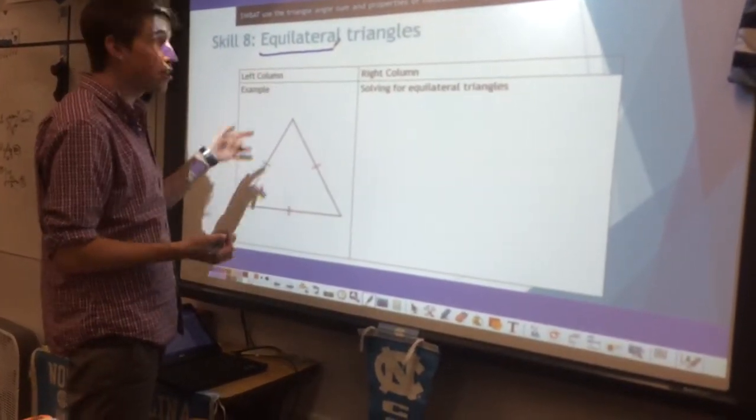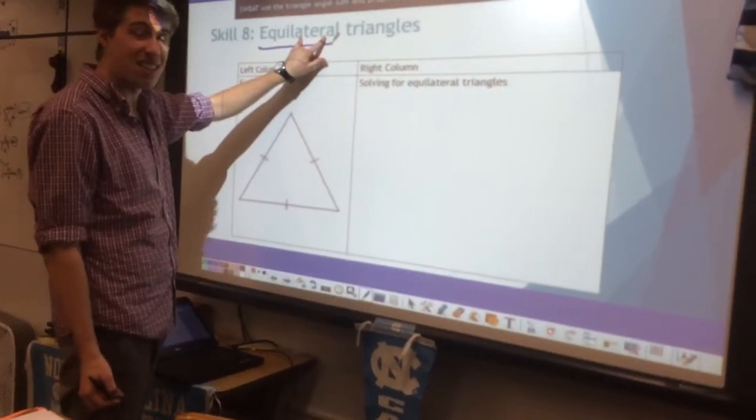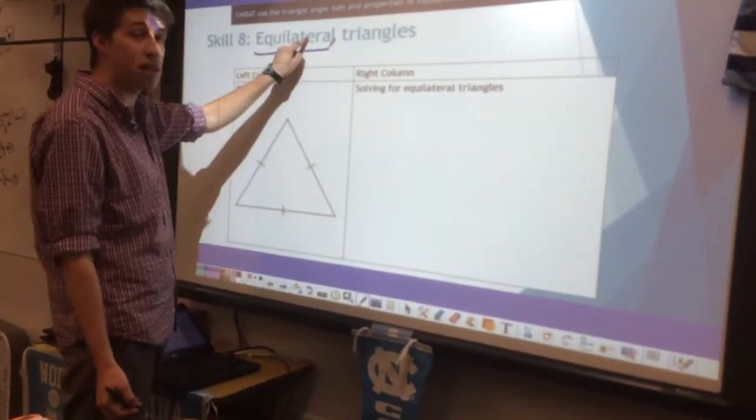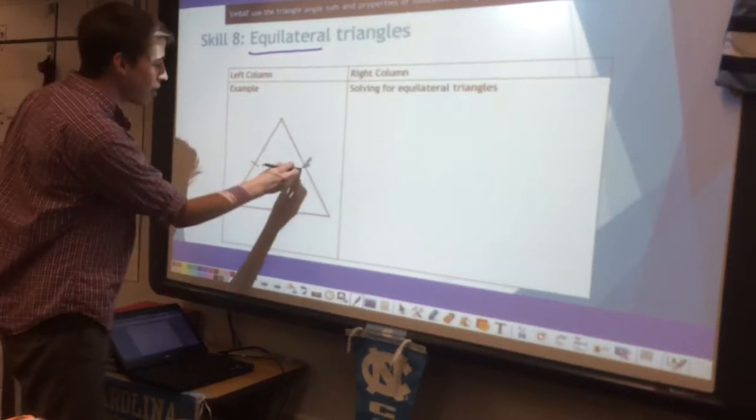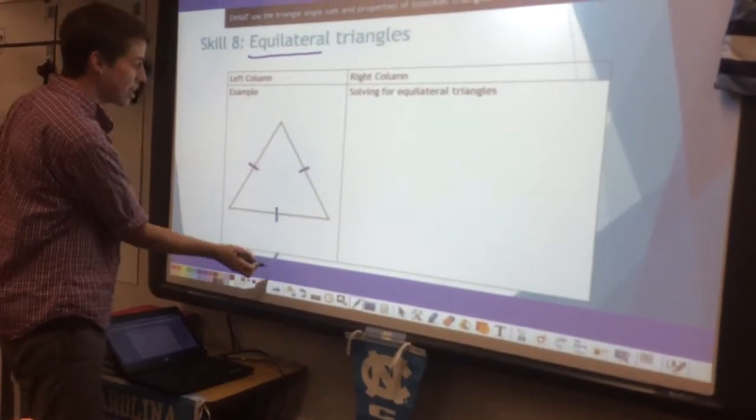Equi means equal. Lateral means sides. This literally means equal sides. And that's what we see here in our example. We have one, two, three equal sides.